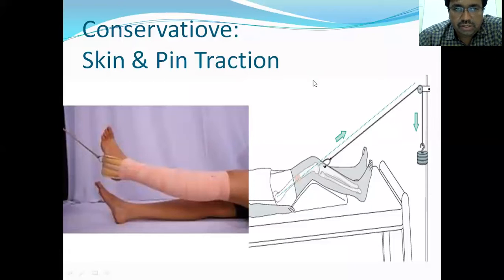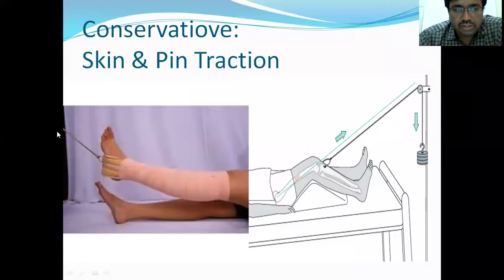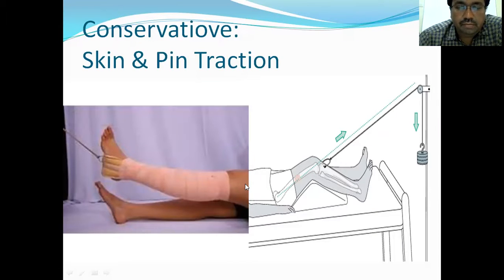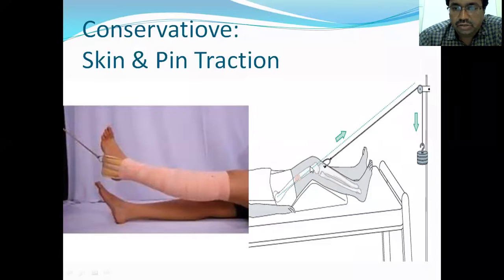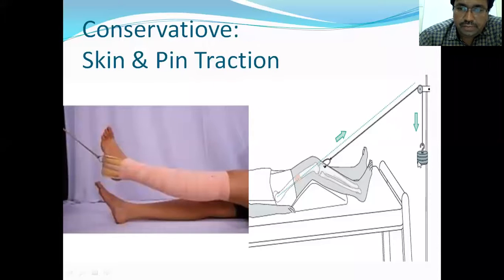If the patient is not fit for surgery, we treat conservatively. Skin traction uses a crepe bandage applied to the leg so that the femur falls into alignment; over three weeks the fracture will unite. For adults, a greater amount of traction is required, so we usually insert an upper tibial pin and apply load — this is called pin traction.